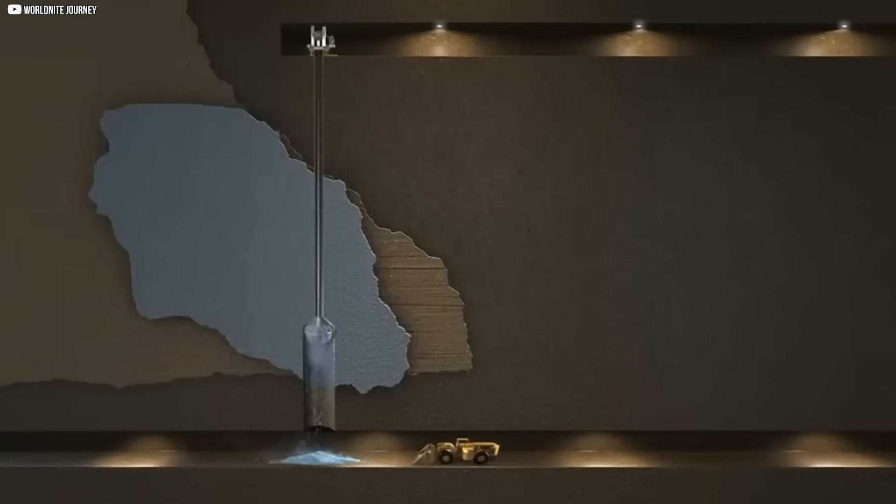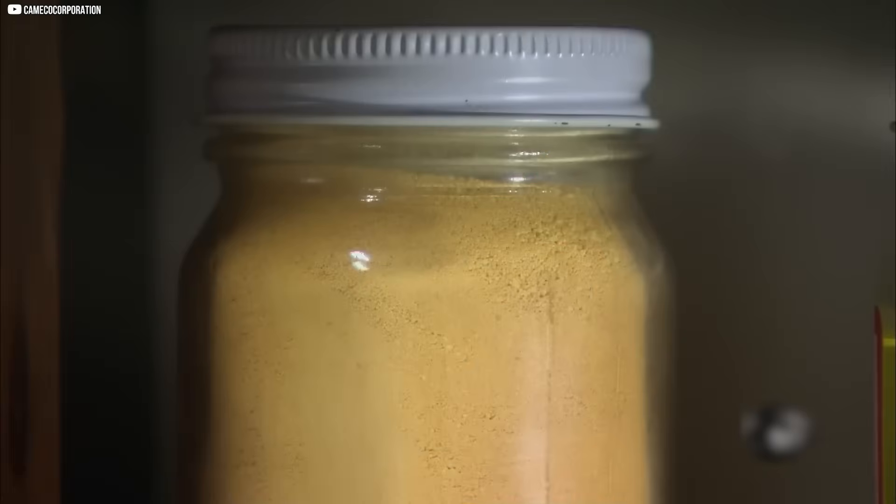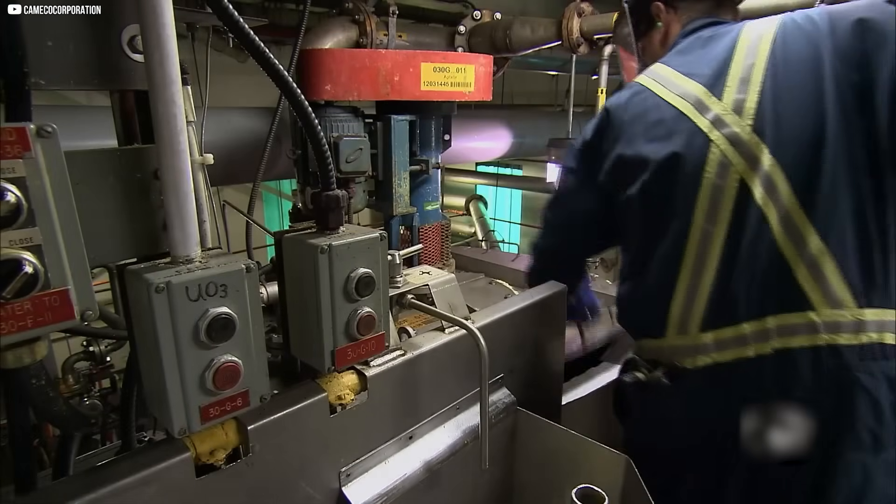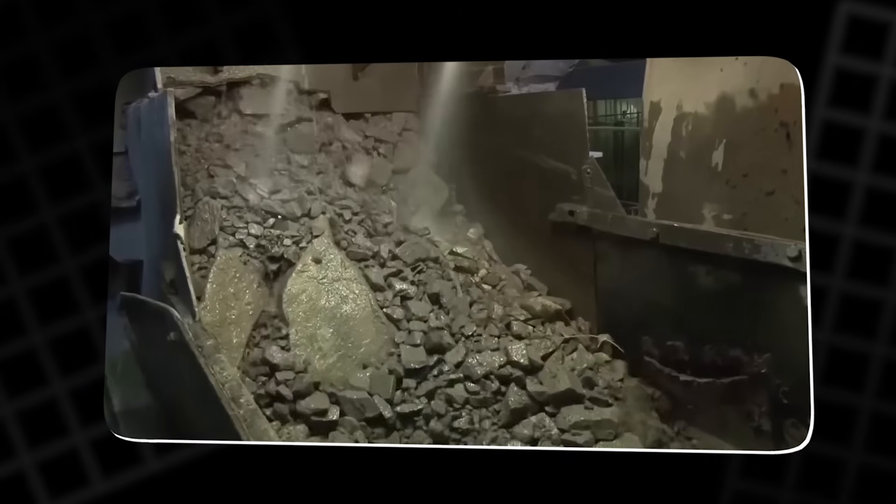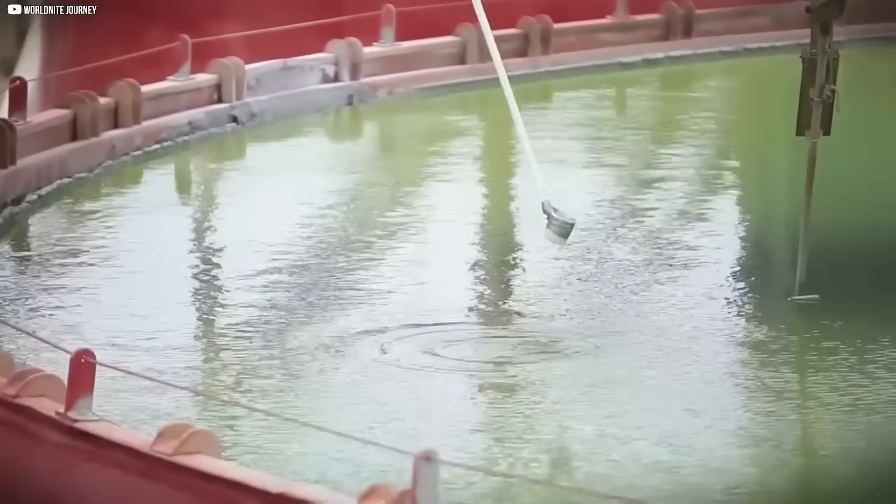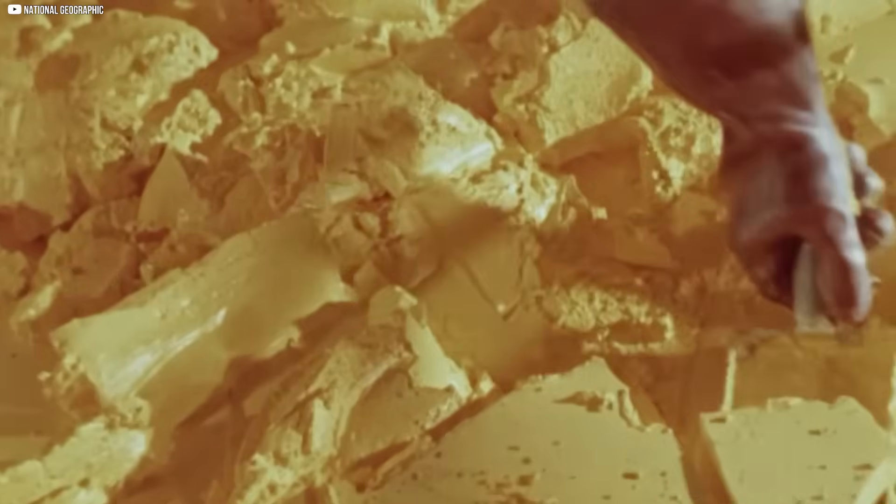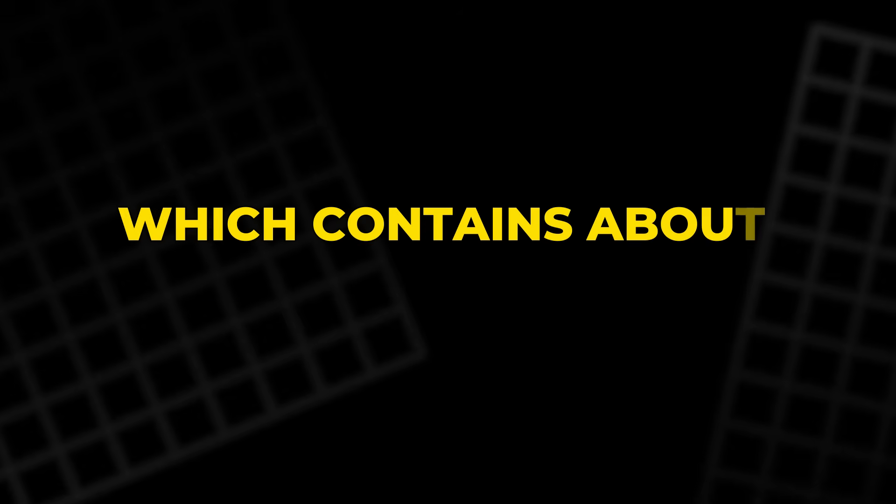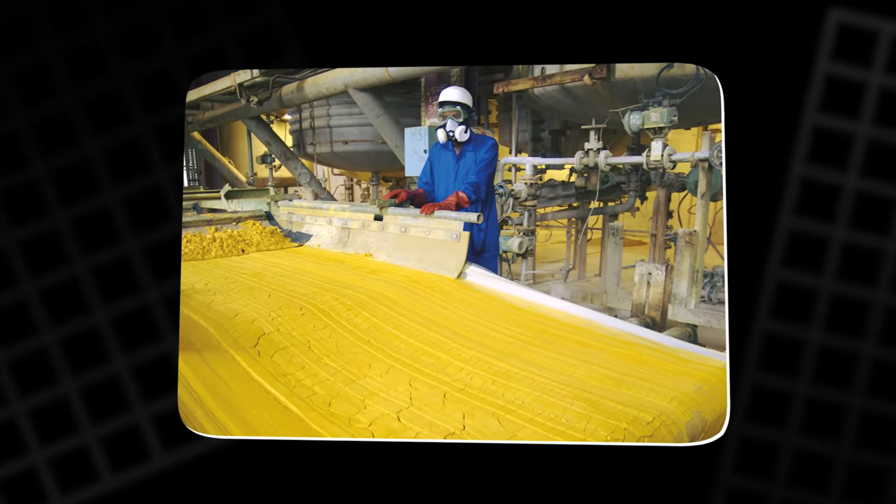In some cases, a technique called in-situ leaching is used, where chemical solutions are injected into the ground to dissolve uranium from the ore, which is then pumped to the surface. Once extracted, the uranium ore is transported to processing plants, where it is crushed into a fine powder to make it easier to separate the uranium from other minerals. This powdered uranium is mixed with acids or alkaline solutions in large steel tanks, a process that separates the uranium from impurities. The result is a yellowish powder known as yellowcake, which contains about 80% pure uranium. While it's relatively low in radioactivity, yellowcake still requires careful handling due to its hazardous nature.